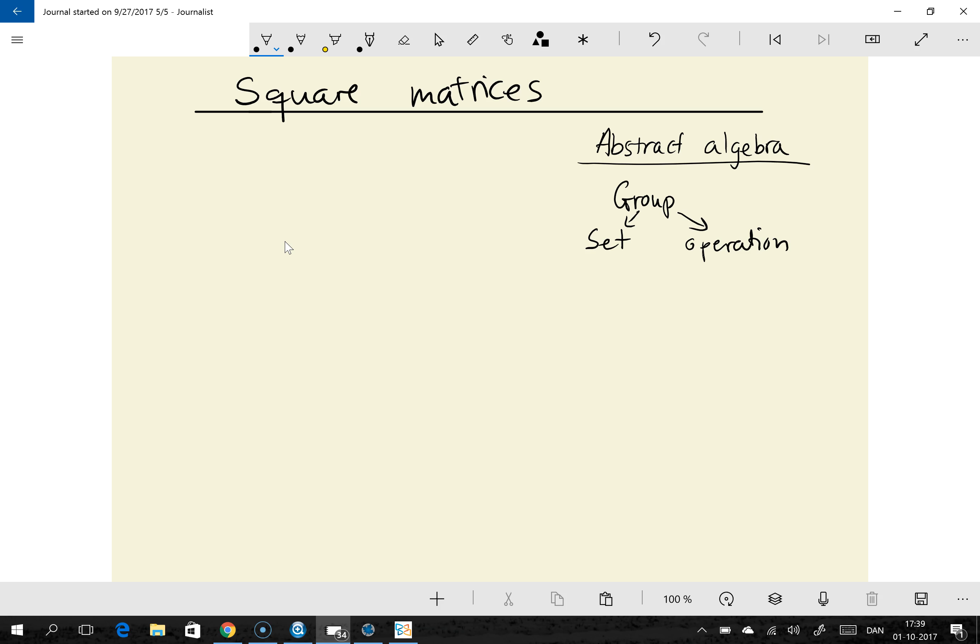That's the two things it consists of, and this set and operation has to comply with four requirements. But as I go through these requirements, let's think of an example that makes it a little less abstract and easier to understand. So let our group example be the set of real numbers, and let the operation be addition.